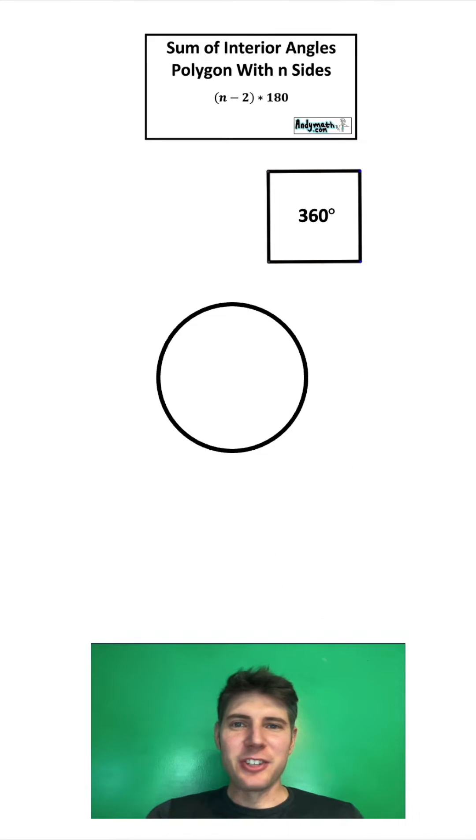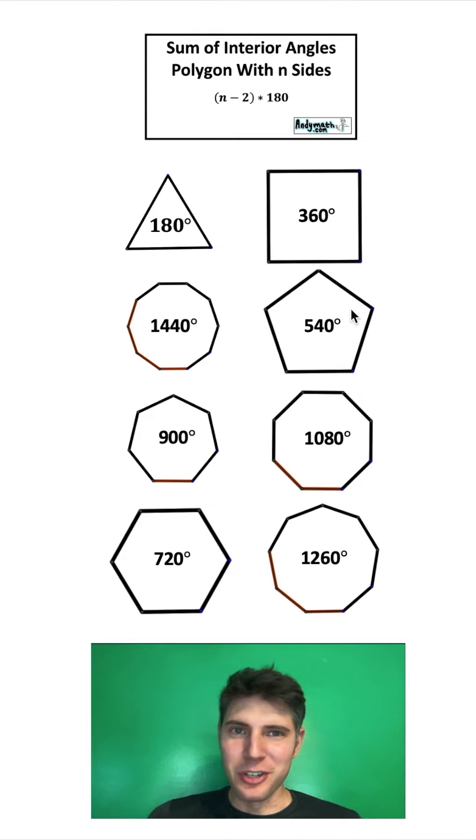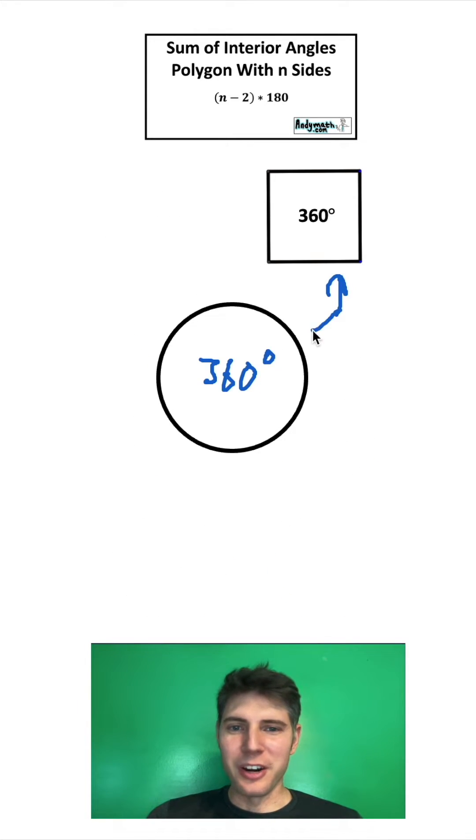So why is it that a circle is said to have 360 degrees and a square has 360 degrees, but none of the other shapes do? What is so special about a square and a circle?